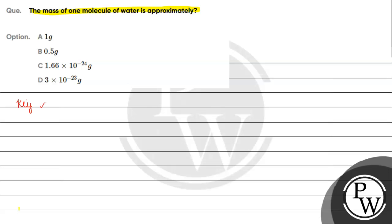Key concept for this question is: we know that the number of moles is equal to mass by molecular mass, and it is also equal to number of molecules by Avogadro's number.